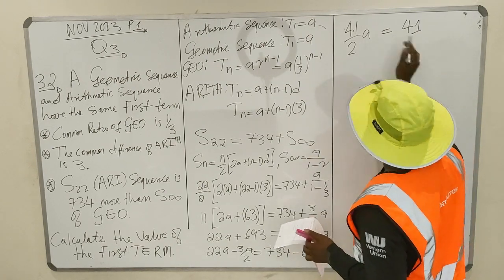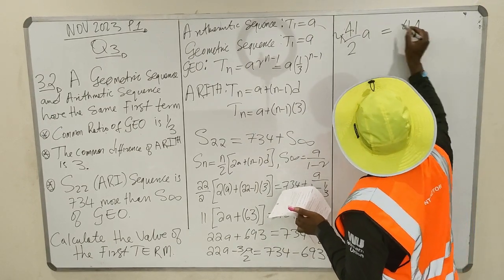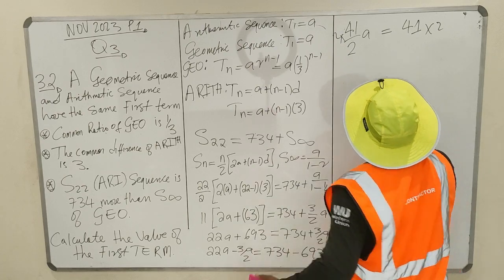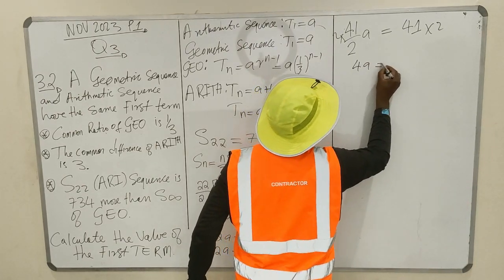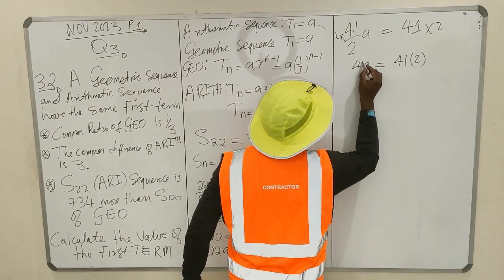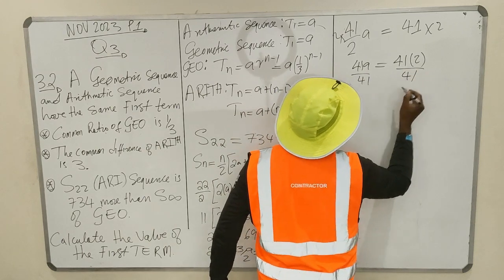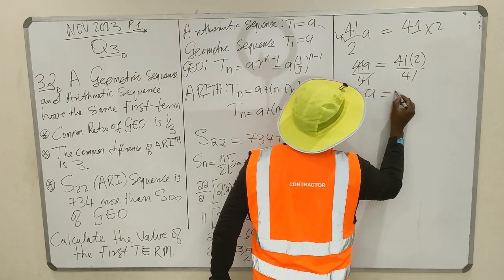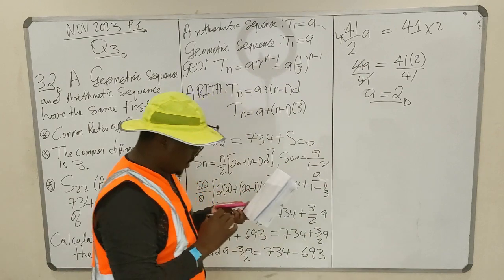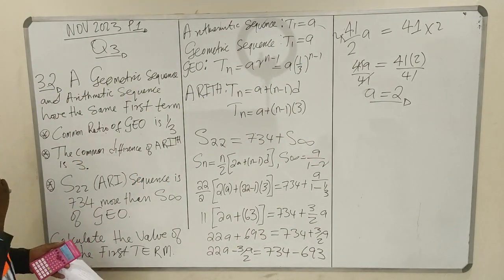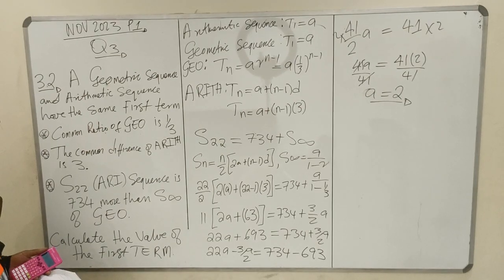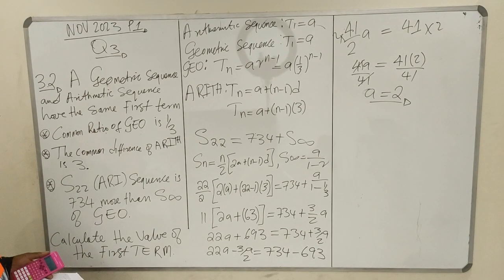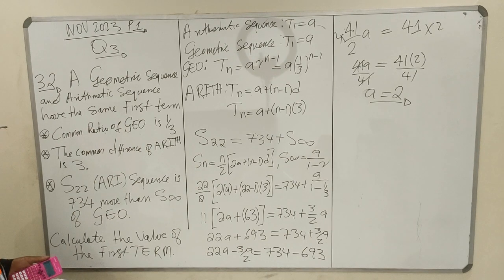Multiplying both sides by 2: 41A = 82. Dividing by 41: A equals 2. So the first term A is equal to 2. That's the answer. We move on to the next question.